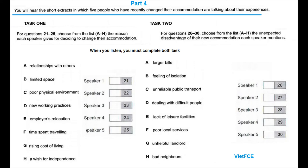Speaker 1. My new place isn't in such a nice area, but it's just round the corner from college, and the gym's nearby too. I knew the rent would be higher because I'm on my own here, but I hadn't realised I'd end up paying more for gas and electricity. It's the price you pay for independence, apparently. Anyway, I've signed a six-month contract with a landlord, so I'll be staying.